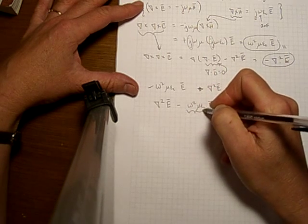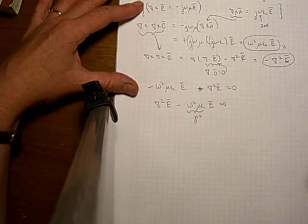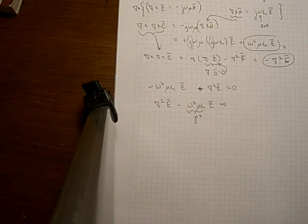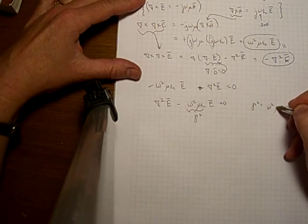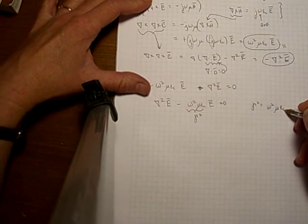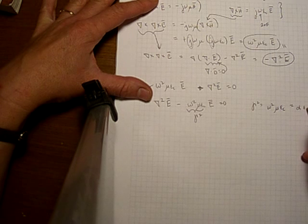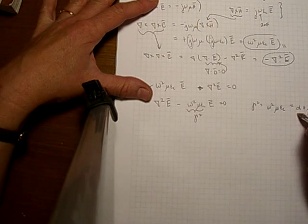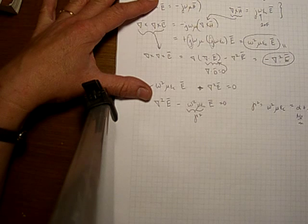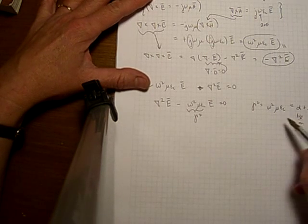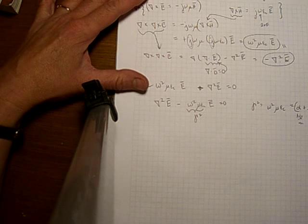This term right here we're going to call gamma squared where gamma is our propagation constant for this particular wave. Gamma squared is equal to omega squared mu epsilon c. It's also equal to alpha plus j beta squared, where the alpha is the attenuation constant and that's given in Neppers per meter. And beta is the radiation constant and that's given in radians per meter or the propagation constant.